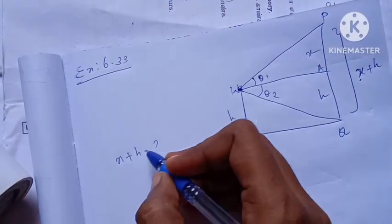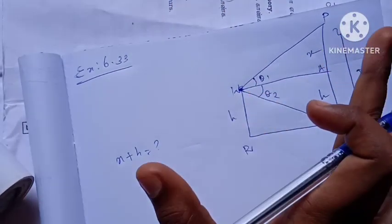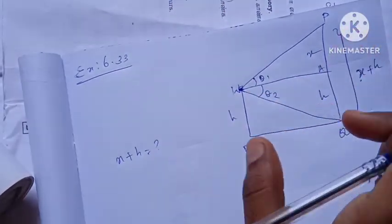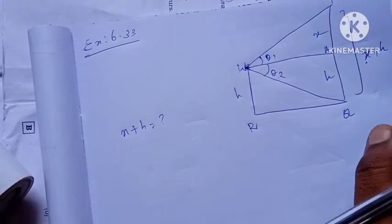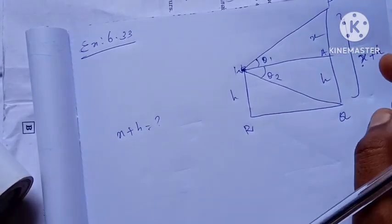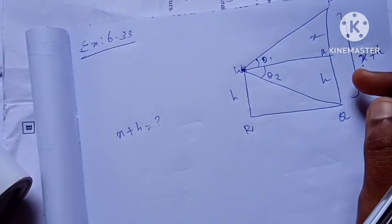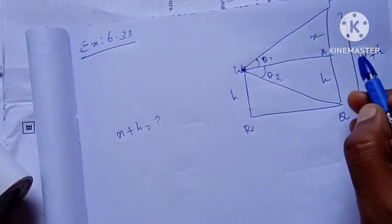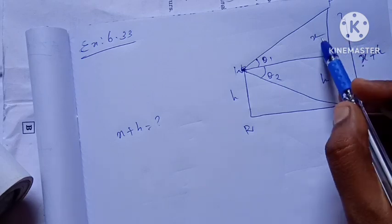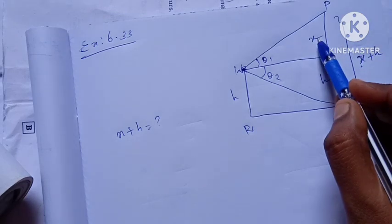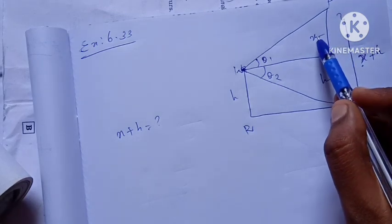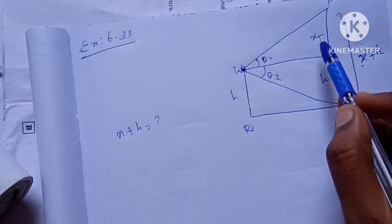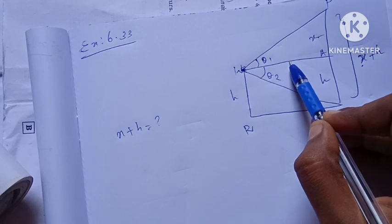We need to find out that X plus H equals H times 1 plus cot theta2 by tan theta1. Now we have to find this value. If we find out this value, we will know this value.